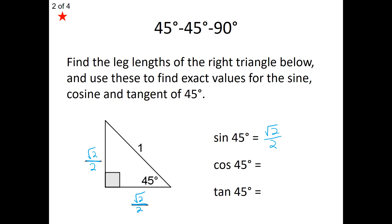Cosine of 45 degrees is adjacent over hypotenuse. Our hypotenuse is 1, so dividing anything by 1 is just itself. Cosine of 45 is simply the adjacent side, which is root 2 over 2, because both legs are equal. For tangent of 45, tangent is opposite over adjacent. Both sides are the same, so we get root 2 over 2 divided by root 2 over 2 — taking the same number divided by itself simplifies down to 1. So the tangent of 45 degrees is just the ratio of 1.